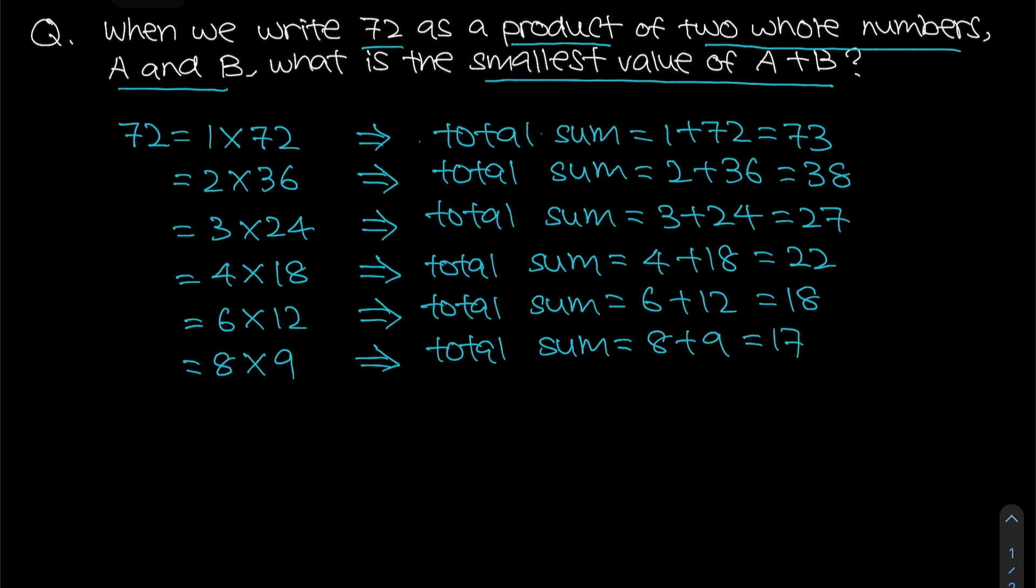You notice that from all of this the smallest sum is actually equals to 17. It does not matter which is A or which is B. A can be 8, A can be 9, similar for B. Because ultimately we are finding the sum of A plus B. Therefore we can straight away say that the smallest value of A plus B is equals to 17, and that is your answer.